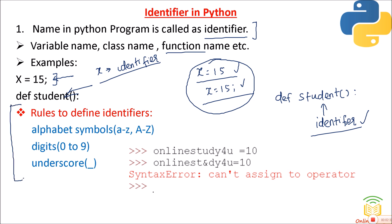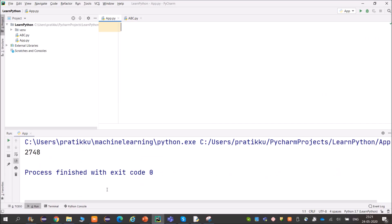You cannot use any symbol while defining an identifier. The allowed characters are: any alphabet — lowercase a to z and uppercase A to Z; digits 0 to 9; and underscore. So an identifier like _abc with a value assigned is valid.